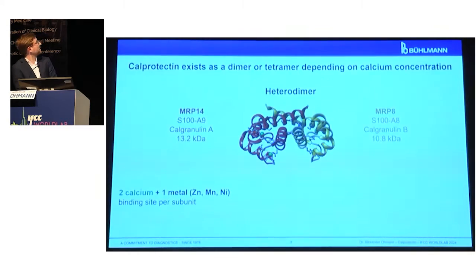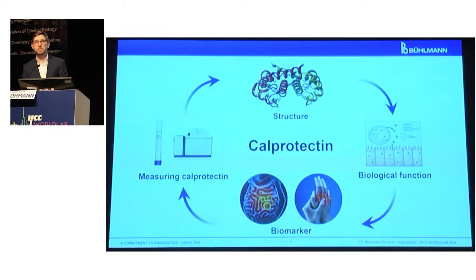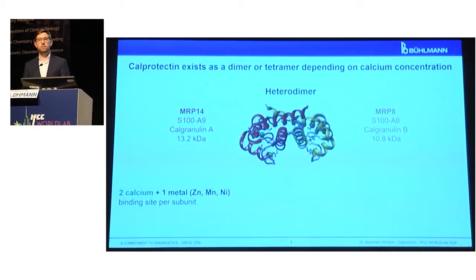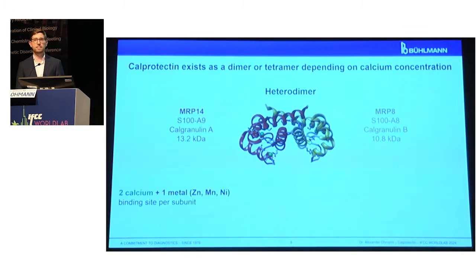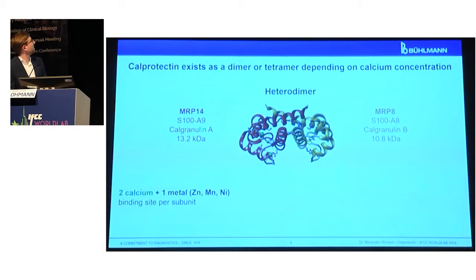The measuring of calprotectin is still related to the structure, and I will go into how the structure is also relevant for how we measure calprotectin. Calprotectin exists biologically as a dimer and as a tetramer, which is dependent on the calcium concentration that it encounters. Here you see a crystal structure of calprotectin as a heterodimer. It is composed of two subunits, and you will find in the literature various different names for it — for example MRP14, MRP8, S100A9, or S100A8.